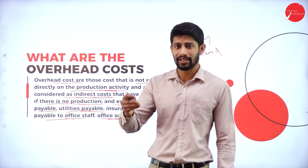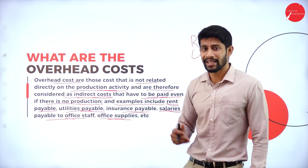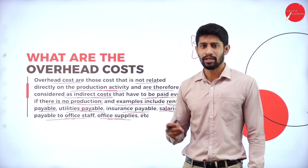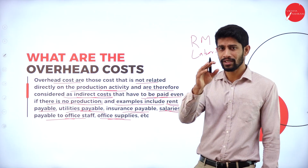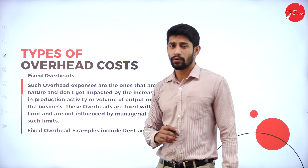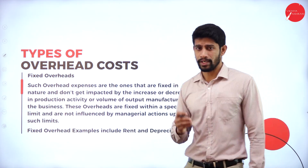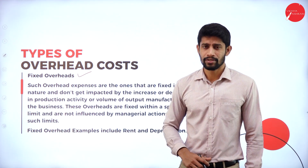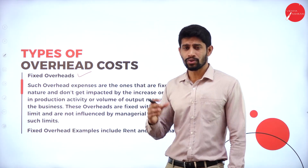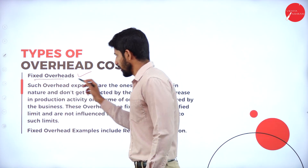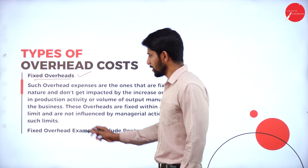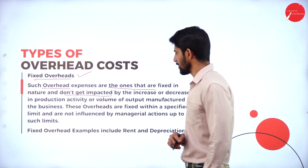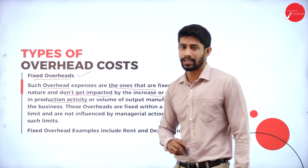So this is the meaning of overhead — it is not directly related to the production activities, hence it is called indirect cost. This indirect cost is payable even though there are no production activities in your business. Moving further, types of overhead costs. In overheads we have different types. The first one is fixed overhead. Such overhead expenses are the ones that are fixed in nature and do not get impacted by increase or decrease in production activities.